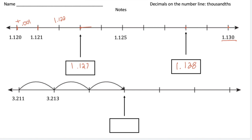That's the first one, let's go down to the second one. So here we have the number 3 and 211 thousandths. But notice the next mark is 3 and 213 thousandths. So between marks, it's increasing by 2 thousandths.